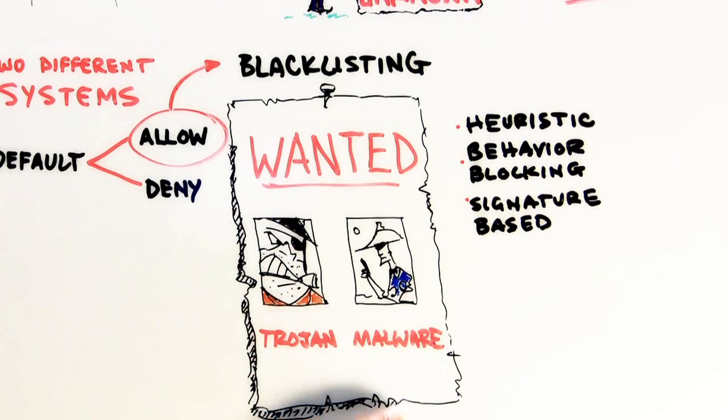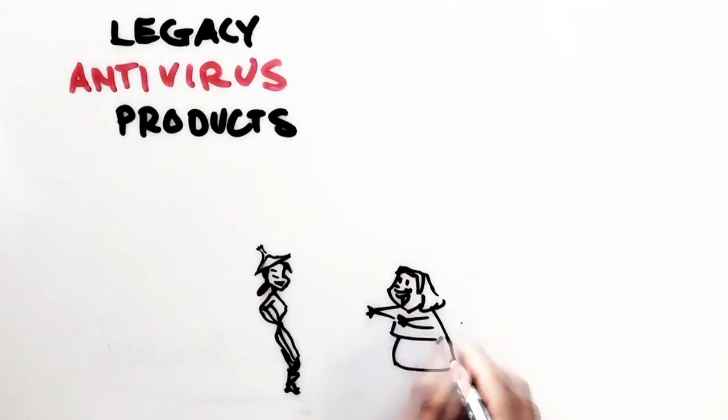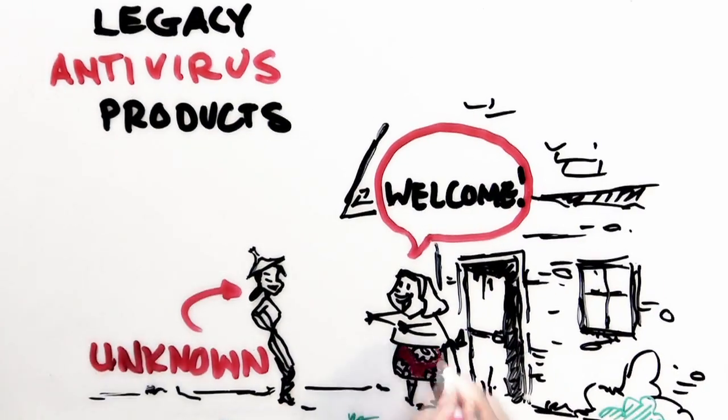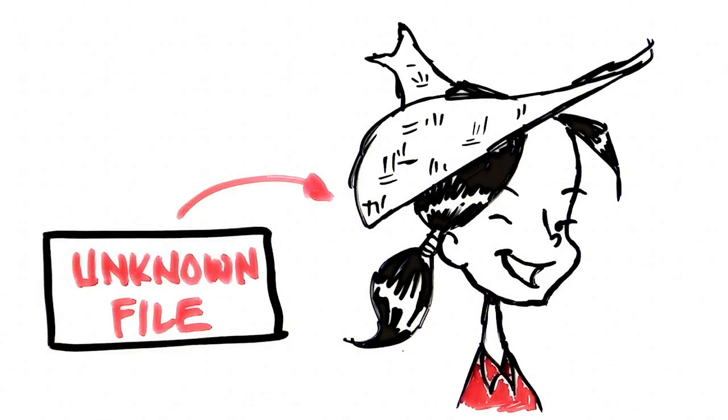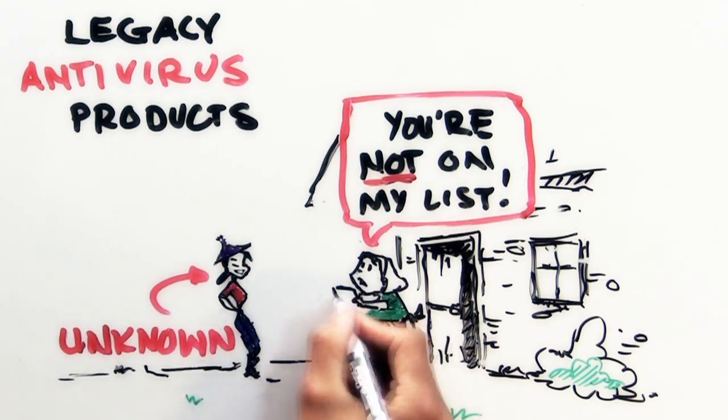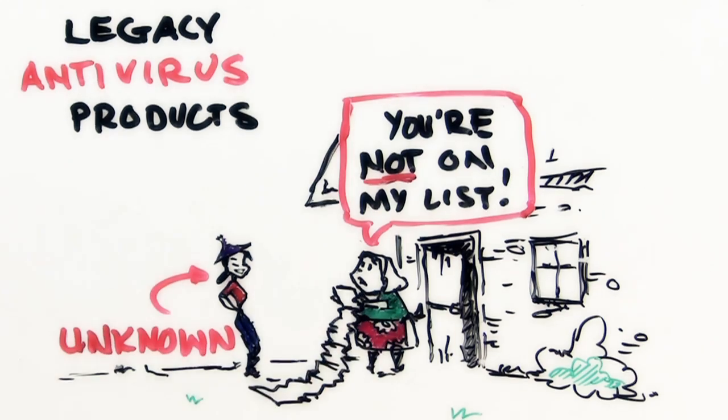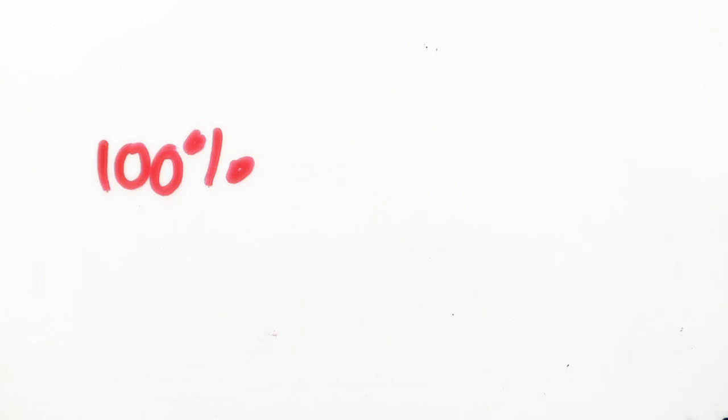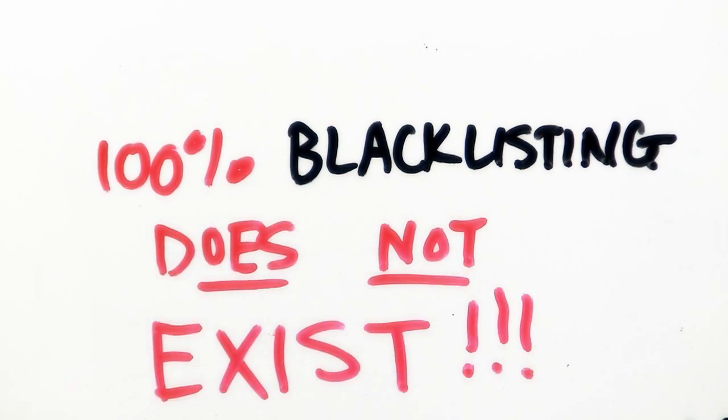What does it do? Default allow system lets in any file as long as they are not in the blacklist. What that means is an unknown file will be executed. Only if your name is blacklisted you will be stopped from executing. Otherwise, please do come in. And you know what? You can never ever catch 100% of all bad files.